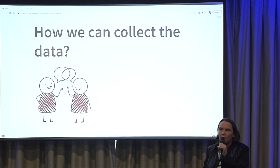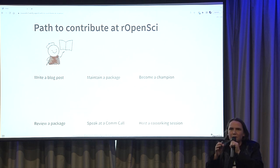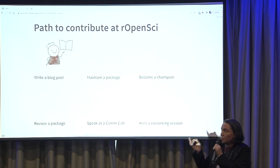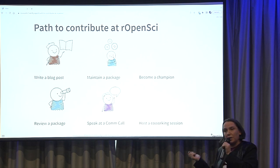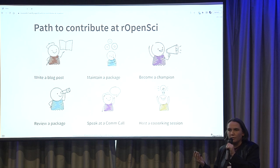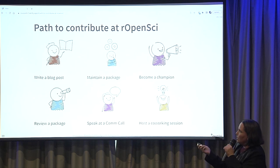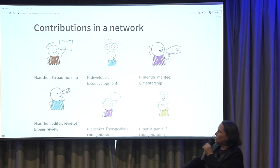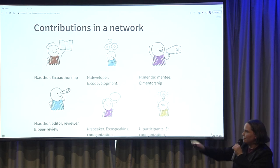How do we collect that data? How do I know if people do things together? One thing we have at rOpenSci is a contribution guide — a full book that tells you the different things you can do: write a blog post, review a package, maintain a package, speak at a community call, be a champion, or host a co-working session. A lot of these things can be done by more than one person. So you can start to identify the nodes and edges: blog post — node: author; edge: co-authorship. Champion — node: mentor and mentee; edge: mentorship. And so forth.